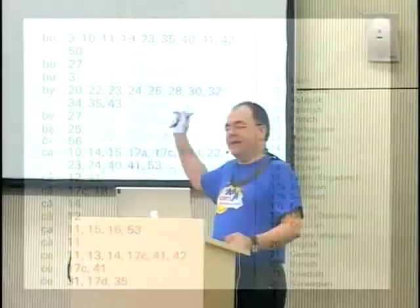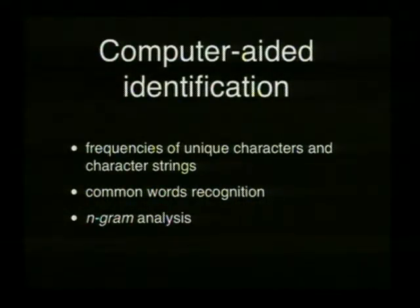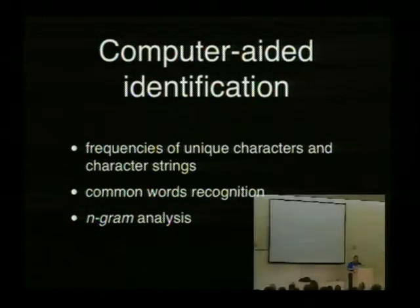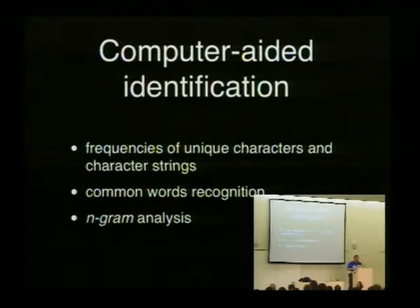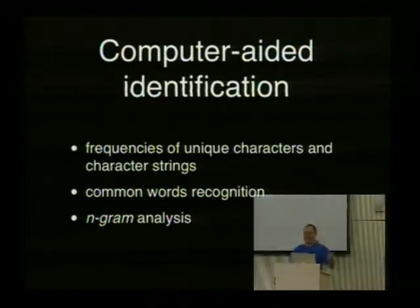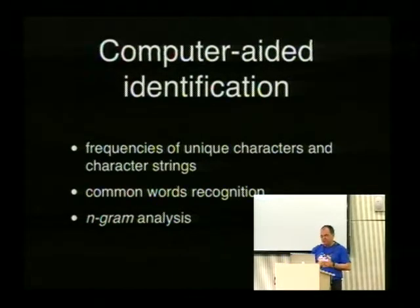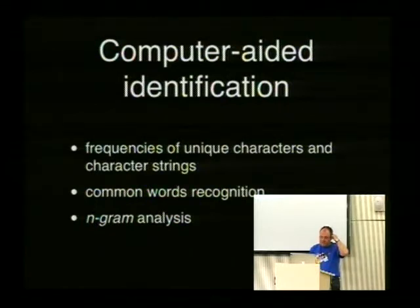Now we come to computer-aided identification. Of course you can do the same thing with the computer — you can count frequencies of unique characters and character strings. This is a method widely used in cryptanalysis and it can be used to identify languages. Another approach is common words recognition, which is a method based on word frequency lists generated from sample texts. The text can be analyzed word by word and compared to the list of, say, the top 100 words in the frequency list.